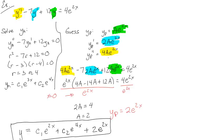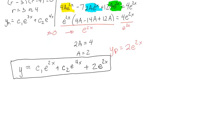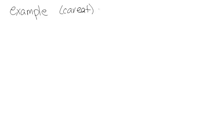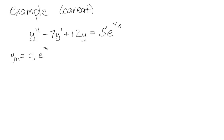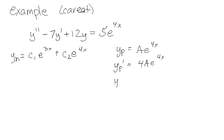Now here's a caveat. Let's do the exact same problem but make the right-hand side equal to 5e^(4x). We already know the homogeneous solution is C1·e^(3x) + C2·e^(4x). So you might go ahead and guess Y_P = Ae^(4x). Let's see what happens when we plug it in: Y_P' = 4Ae^(4x), and so on.